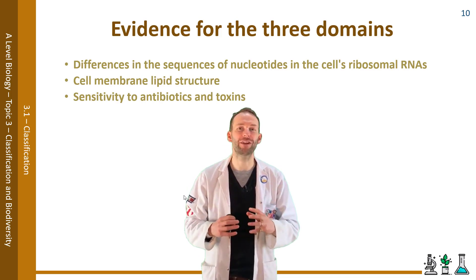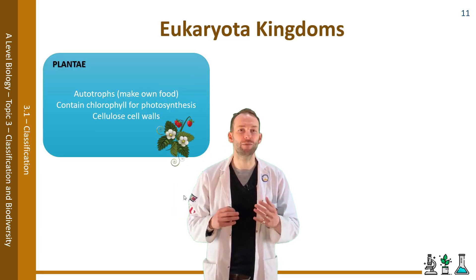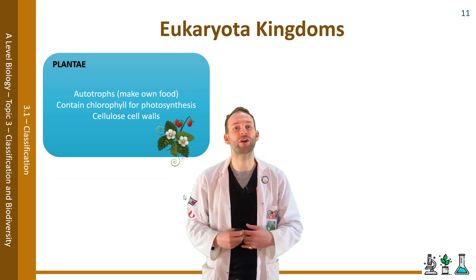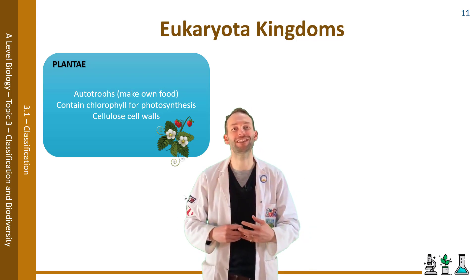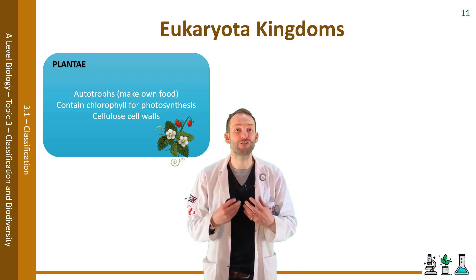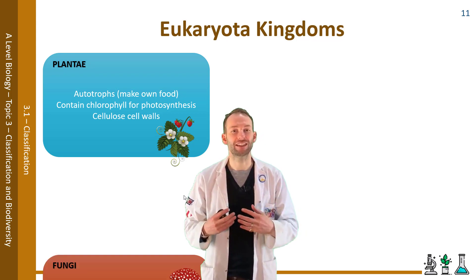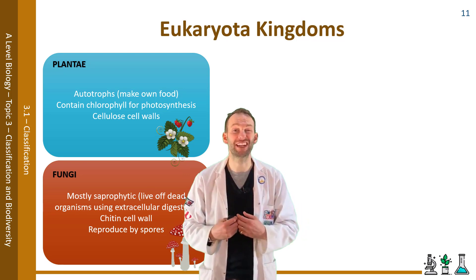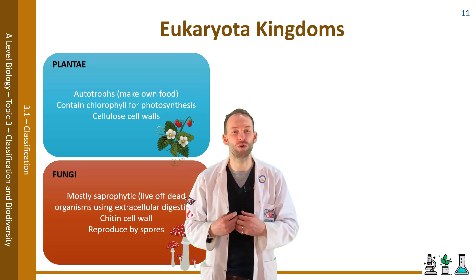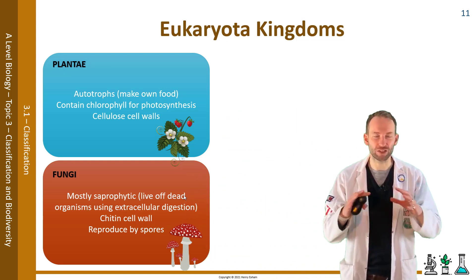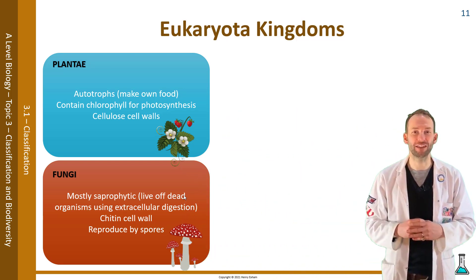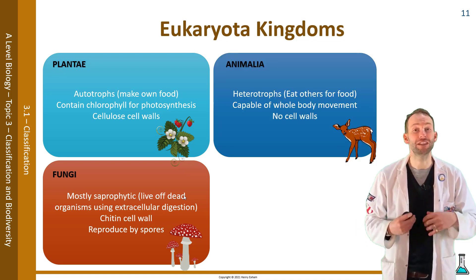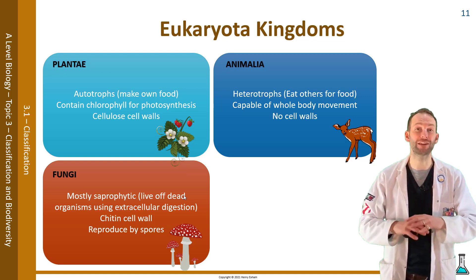Let's focus on the eukaryotic kingdoms: plants, animals, fungi, and protists. Plants are autotrophs — they make their own food. They contain chlorophyll for photosynthesis and they have cellulose cell walls. Fungi are saprophytic, meaning they live off dead organisms and do extra-cellular digestion. They have a chitin cell wall, reproduce by spores, and are made of a structure called a mycelium of hyphae. Animals, or animalia, are heterotrophs — they have to eat other organisms to get their food. They're capable of whole body movement and they have no cell walls.